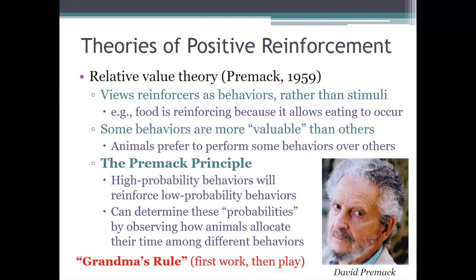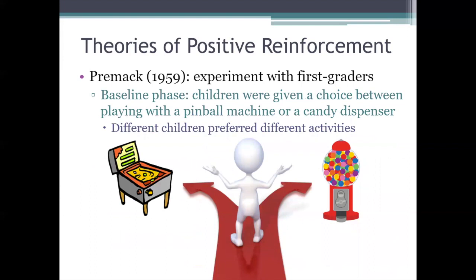To test the idea that more probable behaviors reinforce less probable ones, Premack conducted several experiments, some with children and some with rats. In the experiment with first-grade children, Premack first allowed them to play with a pinball machine or operate a candy machine as much as they wanted — that was essentially the baseline phase. He needed to determine for each kid what their higher-probability behavior was: playing pinball or eating candy. Some kids spent the majority of their time at the pinball machine; others were more interested in the candy machine.